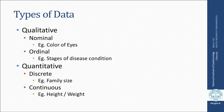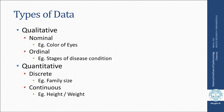Data can broadly be classified into qualitative and quantitative data. Qualitative data, as the name suggests, we cannot quantify them — it is based on some sort of quality. This qualitative data could be nominal data or ordinal data. Examples of nominal data include the color of eyes, the different regions of a city, and so on.